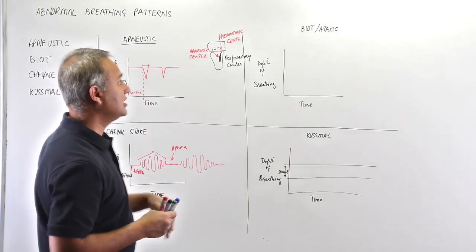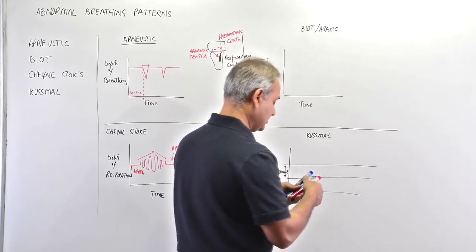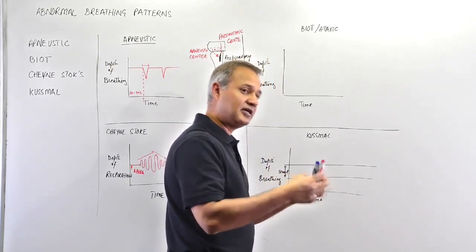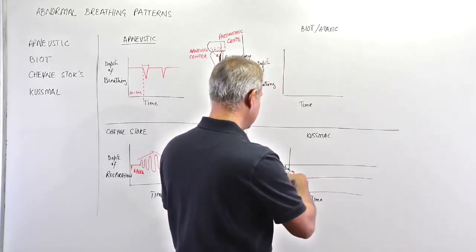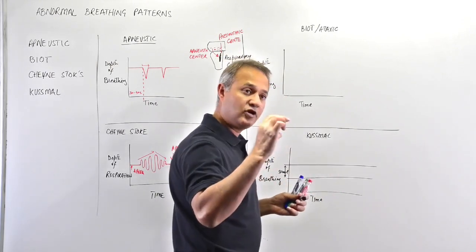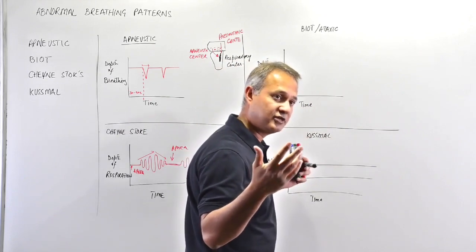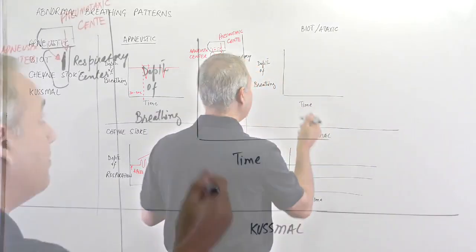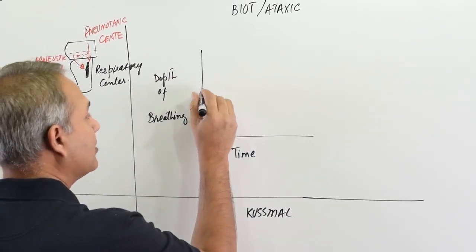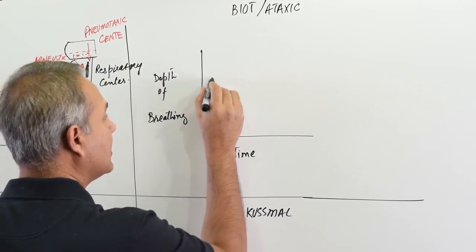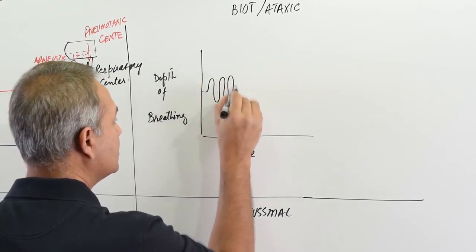Now let's look at Biot ataxic breathing. B and A - they go together, so remember it that way. What this is: the tidal volume is normal. If the person is going to have 500 milliliters of tidal volume, that is what it is.